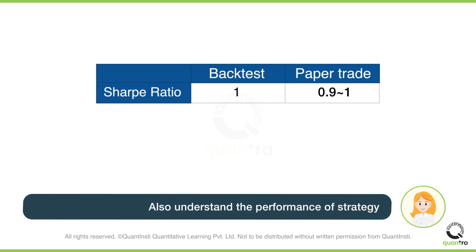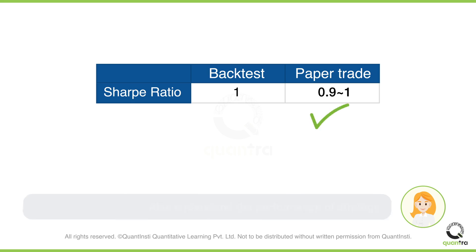You will also understand the stability and the performance of your strategy. If your backtested strategy had a Sharpe ratio of 1, then you will expect a similar Sharpe ratio with some deviation in paper trading — you can expect a Sharpe ratio of 0.9 to 1. If the Sharpe ratio in paper trading is very different, then it is a red signal that something is wrong in the strategy.